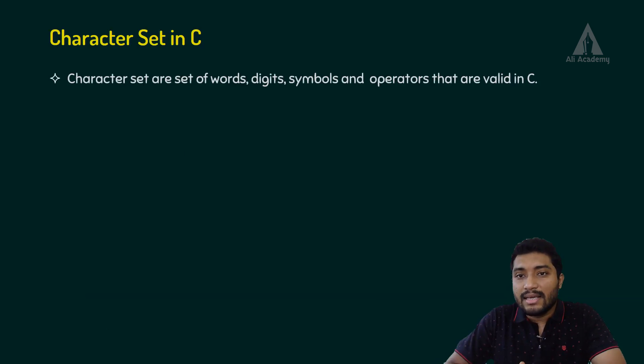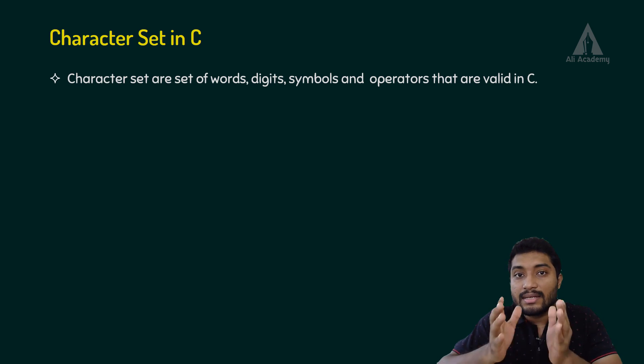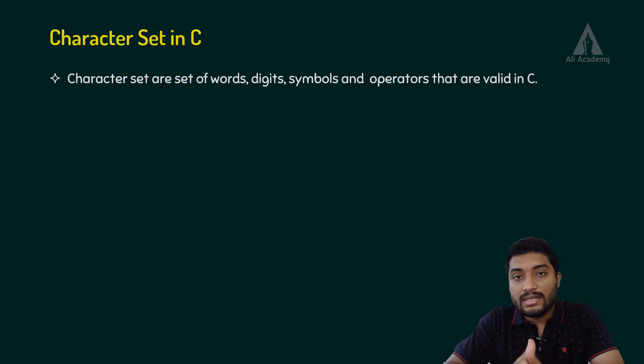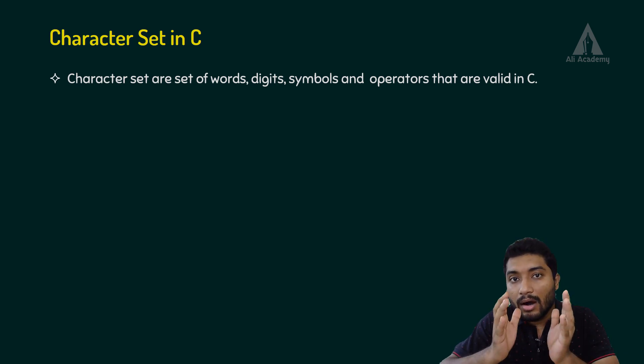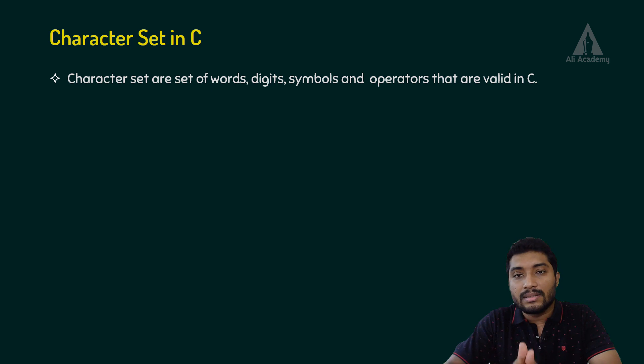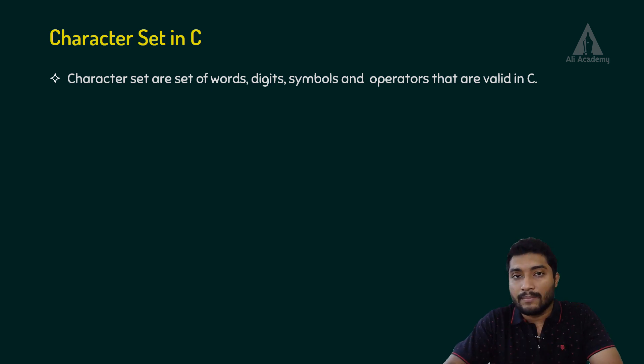Character set in C is actually a set of words or digits or symbols or operators which are valid in a C program.